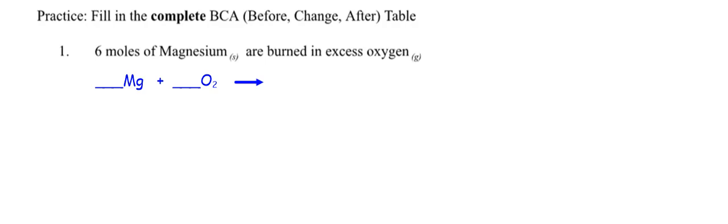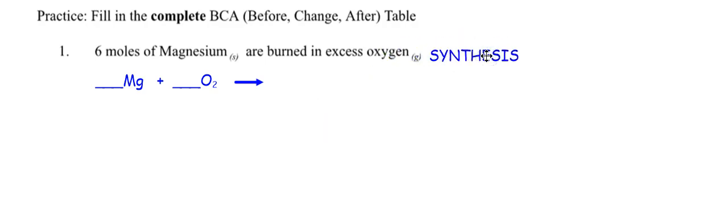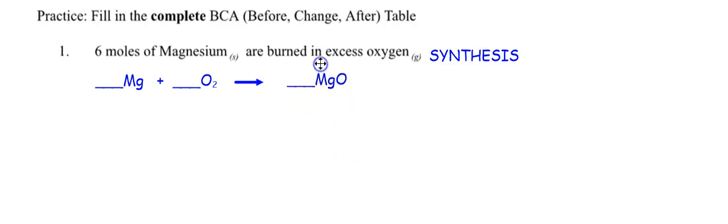Is it synthesis, decomposition, single replacement, double replacement, or combustion? We have an element and an element — the only thing two elements can do is synthesis. So I need to make two into one. I need to make magnesium oxide, putting magnesium and oxide together.